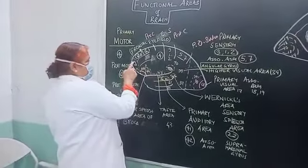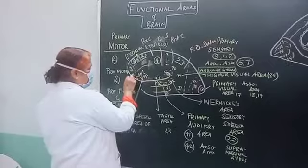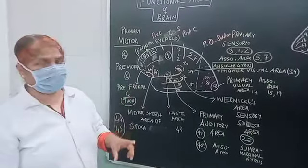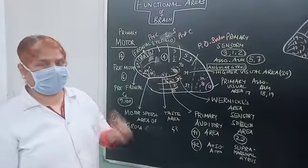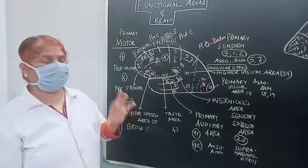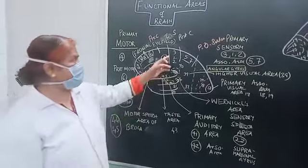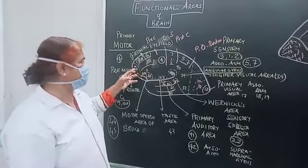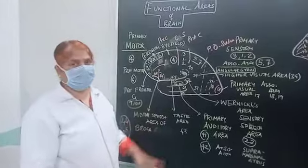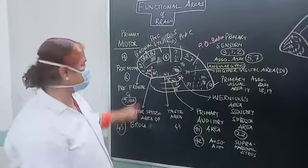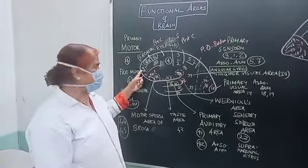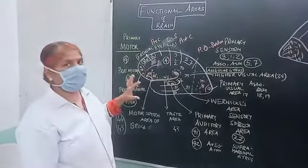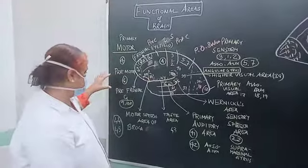Now coming to area number 9, 10, 11 — this area is called the prefrontal cortex, a very important one. This is the decision-making area. Whatever information is given by the sensory system, areas 3, 1, 2 will convey all this information to the association areas 9, 10, 11. The decoding of the sensory information is done and a decision is taken, analyzed, and then conveyed to the motor system. So areas 9, 10, 11 are the main decision-making areas of the brain.